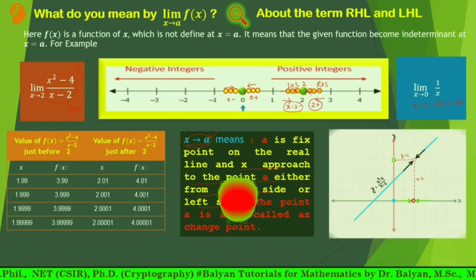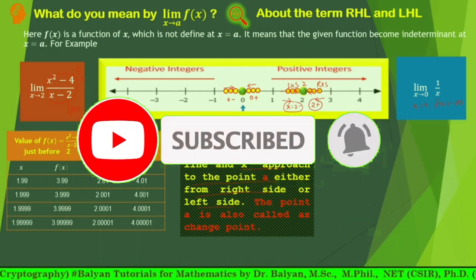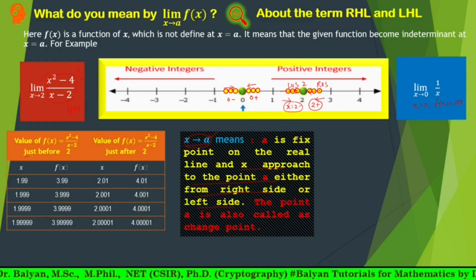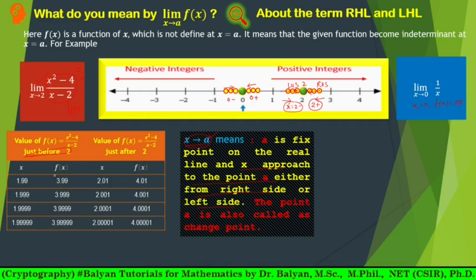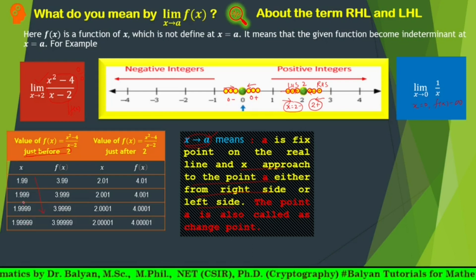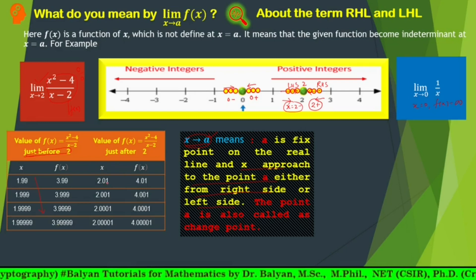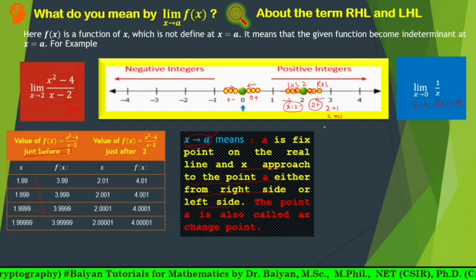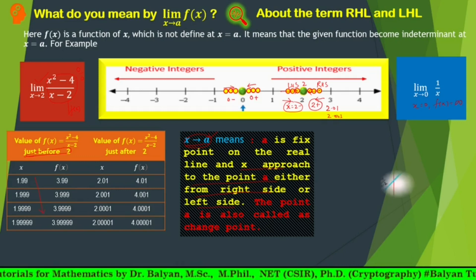Let us explain this example once again. When we calculate the value just before 2: when x equal to 1.9, f(x) becomes 3.99; when x is 1.99, y becomes 3.99. It is clear that when x tends to 2 from the left-hand side, y goes towards 4. Similarly, when x is 2.01, y becomes 4.01, and when x is 2.001, y goes very near to 4. We can explain these facts with this figure.